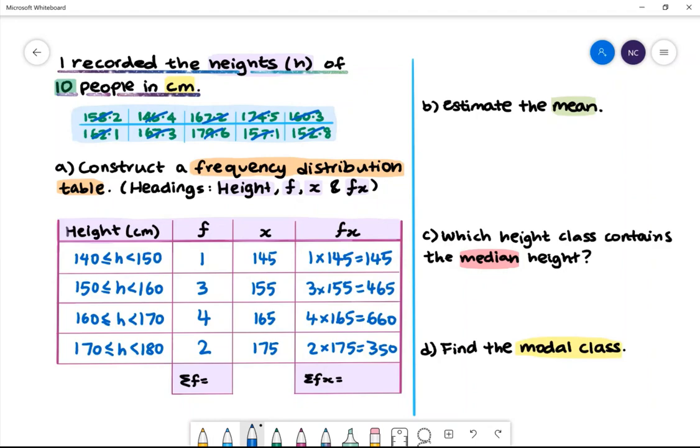To complete the sum of f, we need to add all the values in the frequency column. 1 plus 3 plus 4 plus 2 gives 10. To complete the sum of fx, we need to add all the values in the fx column. We will get 1620.